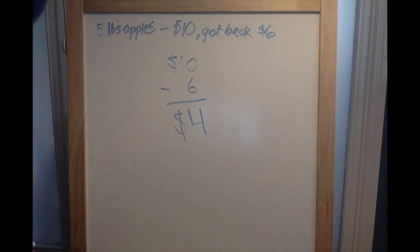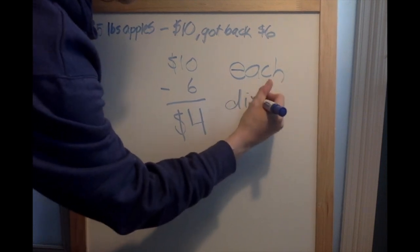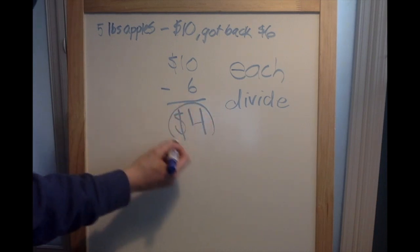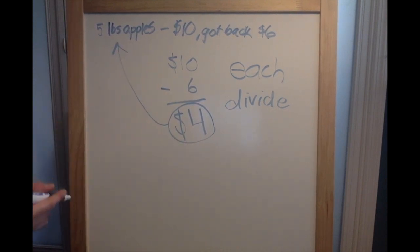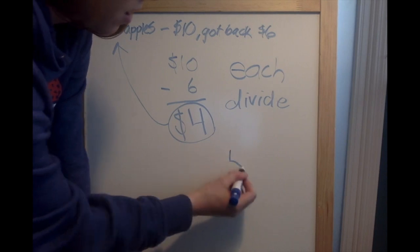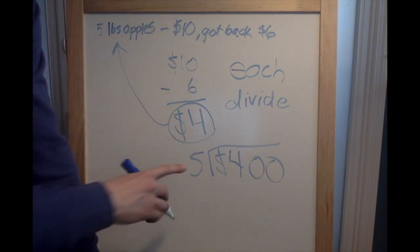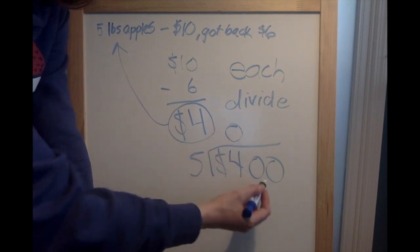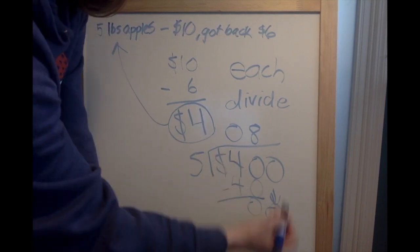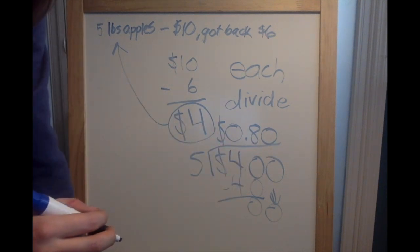The problem asks us what was the cost of each pound of apples. We know that the keyword 'each' means that we need to divide. Because it says 'each,' we need to divide the amount that he paid by the pounds of apples. We know that he bought five pounds of apples and he paid four dollars total. So we're going to divide four dollars divided by five pounds of apples. Five does not fit into four, but five does fit into forty eight times. Five times eight is forty. Bring down the zero, and five fits into zero zero times. That tells us Carlos paid eighty cents for each pound of apples.